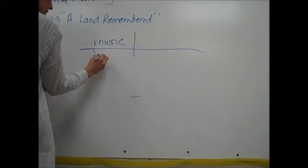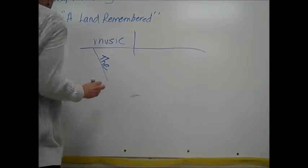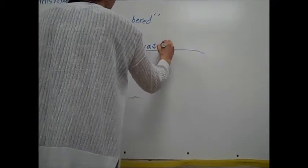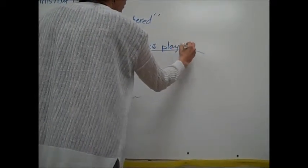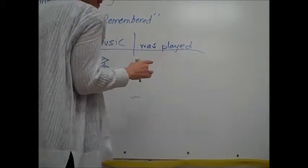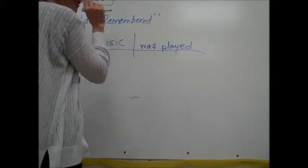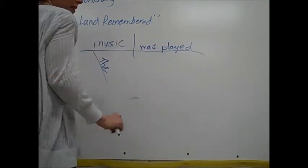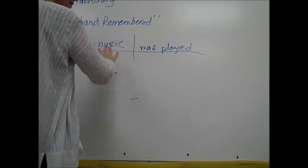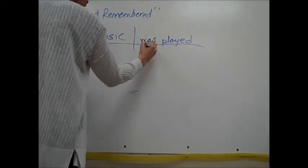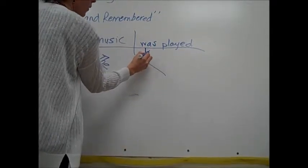'Was played.' So the first thing that you would do when you have a challenging sentence like this is just try to find your little parts: the subject and the verb phrase. Once you do that, the rest of it can become easier. 'With energy' - I know that 'with' is a preposition word.